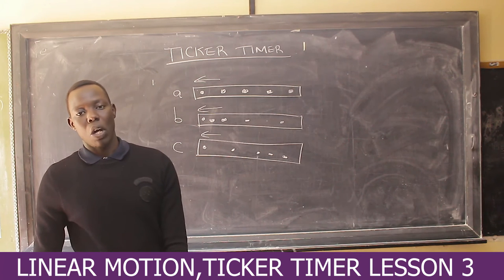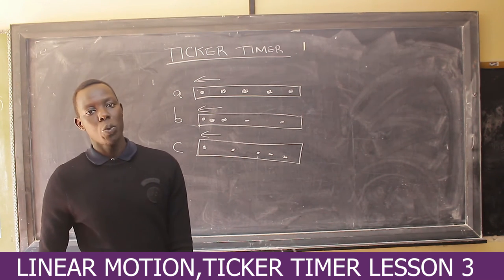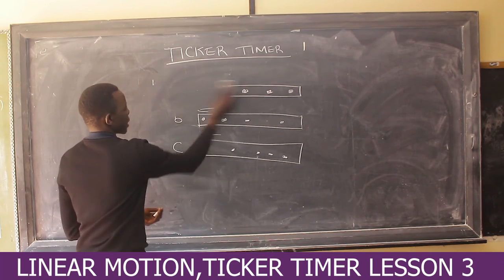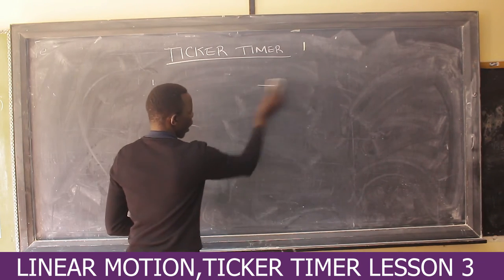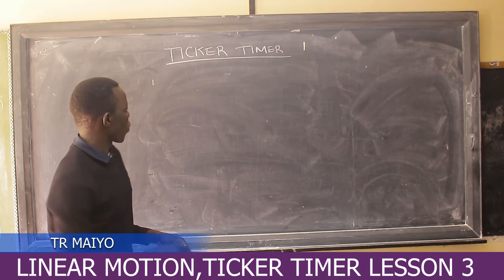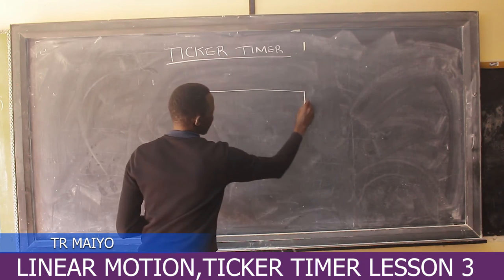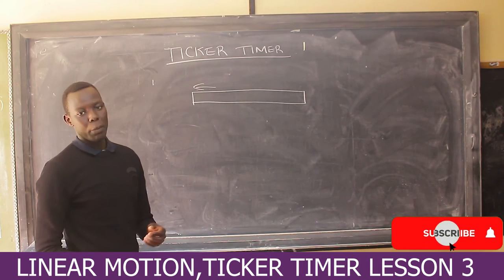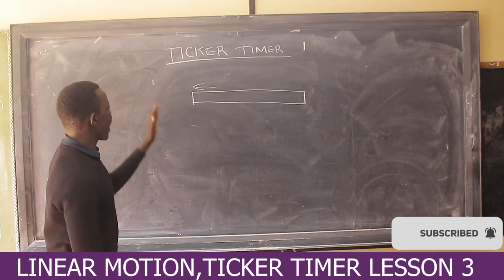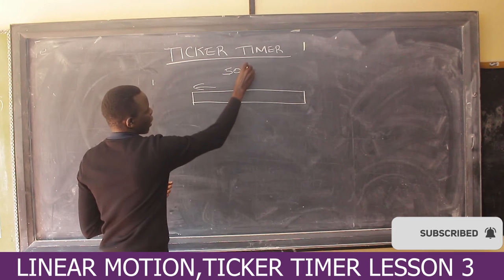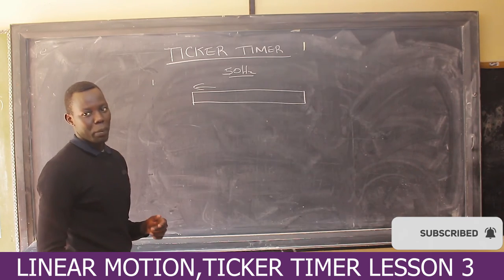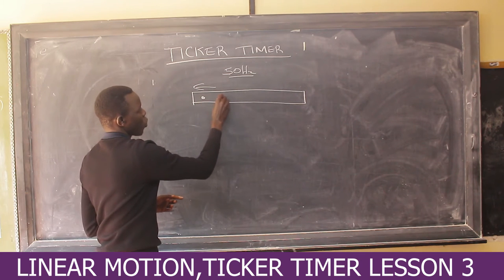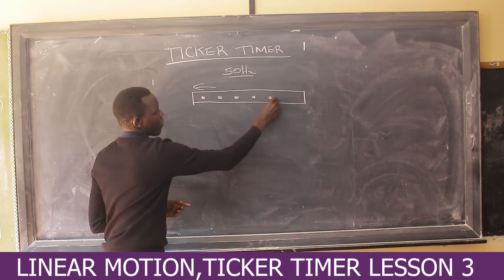Now let's move to the last part: how can we use a ticker timer to calculate acceleration? I'll show you two ways, starting from the simpler one. First, I'll show the direction the tape was pulled. The frequency was 50 Hz. I'll give you several dots on the tape: one, two, three, four, five, and six.